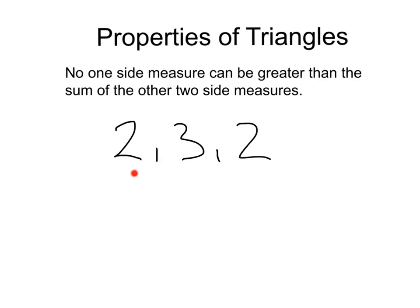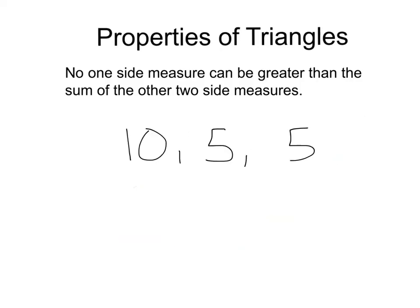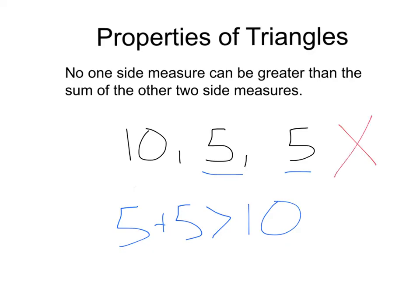Let's see if you can figure out whether or not these are possible triangle side lengths. Take the two smallest sides — two and two — and if we add those, two plus two, are those bigger than the third side of three? Well, four is bigger than three, so yes, these are possible side lengths. What about seven, eight, and twenty? Seven plus eight is fifteen, which is smaller than twenty, so this is not a possible triangle. What about ten, five, and five? Five plus five equals ten, which is not bigger than ten — it has to be bigger — so these are not possible triangle side lengths.